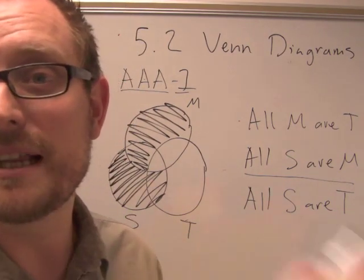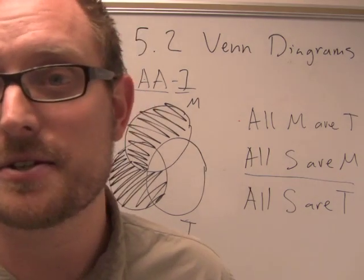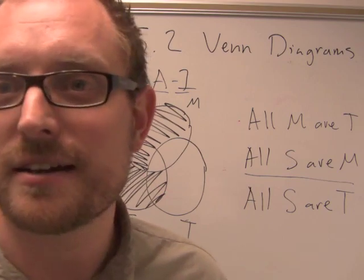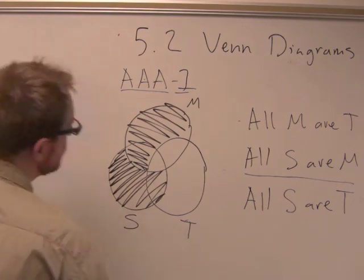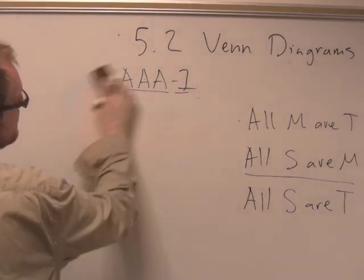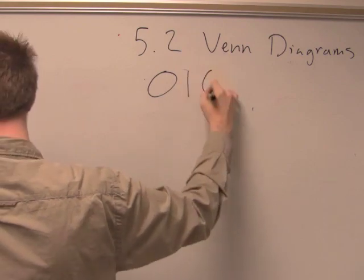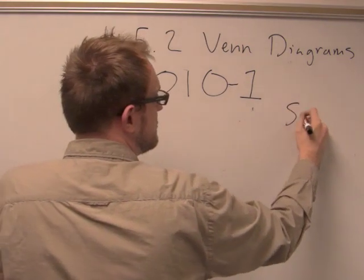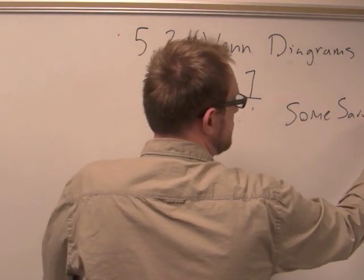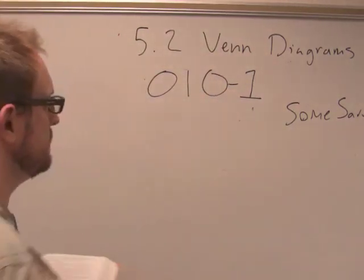So you can actually, in Lesson 5.1, I gave you a list of all the unconditionally valid arguments, and they'll always work like this. If you want, go ahead and try to test and give Venn diagrams for all those arguments. But this is how it works. Let's try one more example here. The AAA-1 is a rather easy argument. Let's try one that's a little harder.